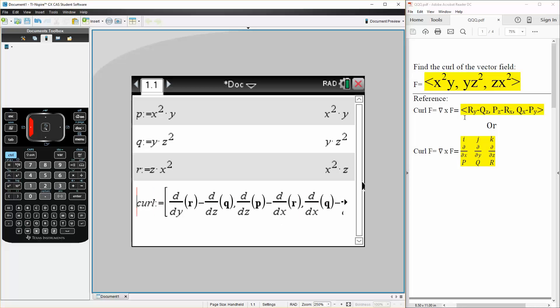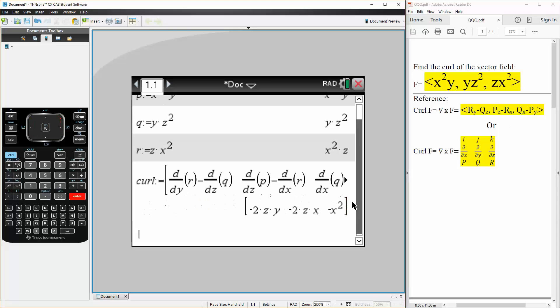Now, let's just make sure we write everything correctly. So we have dy for r, dz for q, dz for p, dx for r, dx for q, and then dy for p. So simply hit enter.